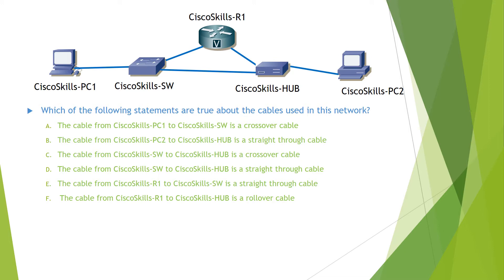Which of the following statements are true about the cables used in this network? Options: the cable from PC1 to switch is a crossover cable; the cable from PC2 to hub is a straight-through cable; the cable from switch to hub is a crossover cable; the cable from switch to hub is a straight-through cable; the cable from router R1 to switch is a straight-through cable; the cable from router R1 to hub is a rollover cable.